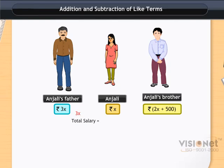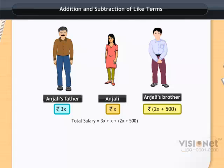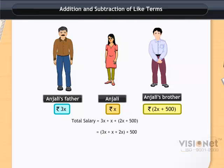Here, we have to add 3x plus x plus 2x plus 500. 3x, x, and 2x are like terms. So we group them together: 3x plus x plus 2x plus 500. Now look at their numerical coefficients — they happen to be 3, 1, and 2 respectively. So we take x common and add these coefficients.